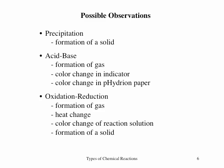Observations are critical to correctly classifying a reaction. An insoluble solid must be formed in precipitation reactions. Acid-base reactions show either the formation of a gas or a change in the color of an indicator, assuming it is present. Oxidation-reduction reactions can produce the same visible changes as both precipitation and acid-base reactions.